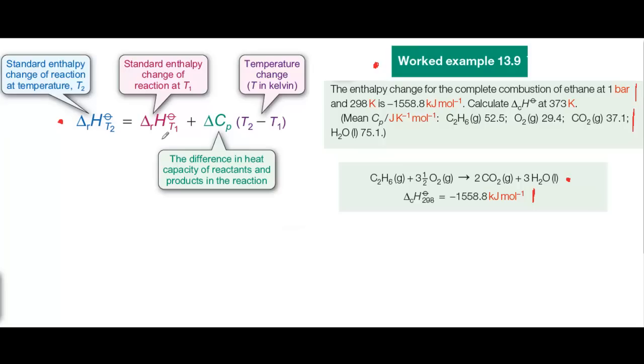T1 is 298 Kelvins, and we're given the value for delta H at 298 Kelvins. It's minus 1558.8 kilojoules per mole, but we're going to multiply that by 10 to the 3 to turn it into joules per mole, so that the units will be consistent with the rest of the calculation. And forgetting to do that is a very common mistake.